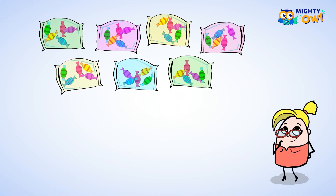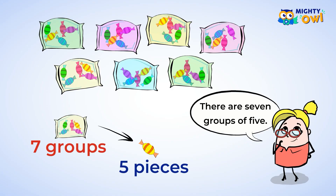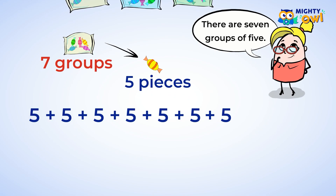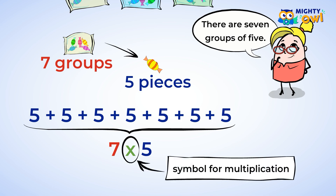Take a look back at the seven packages of candy. There are seven groups, and each group has five pieces of candy. This means that there are seven groups of five. You can look at it as a long addition problem like you did earlier, or you can look at it as a multiplication problem. Seven groups of five can be written as seven multiplied by five. You see the new symbol between the five and the seven? That's the symbol for multiplication.